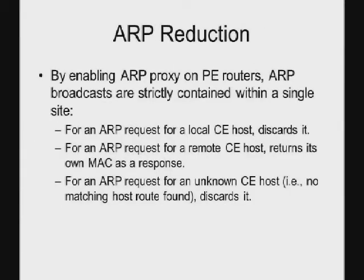By using ARP proxy on PE routers, ARP broadcasts are contained within a single site. For example, if an ARP request for a local CE host is received, the PE router just discards it. For an ARP request for a remote CE host, the PE router should return its own MAC address. For an ARP request for an unknown CE host — that is, there is no matching host route for that destination host — the PE should discard the packet.